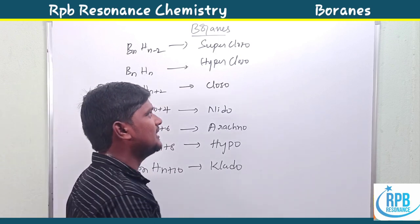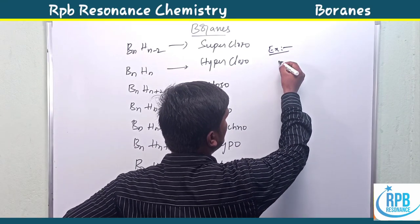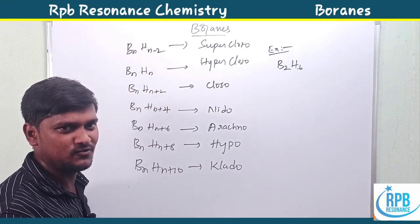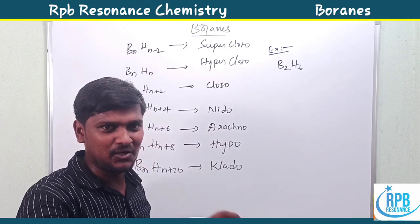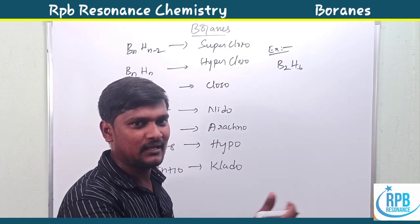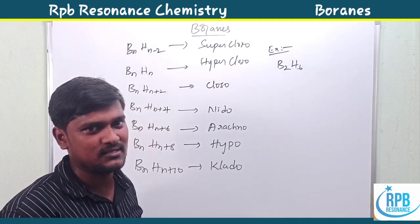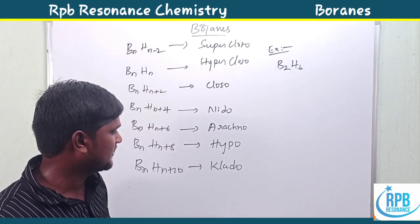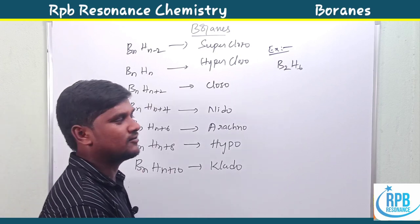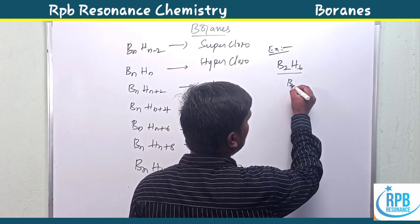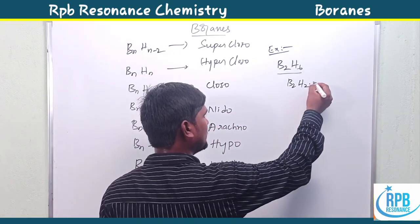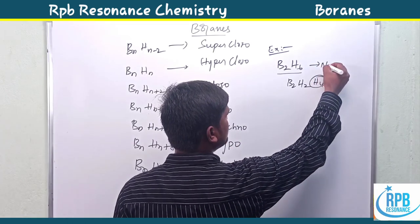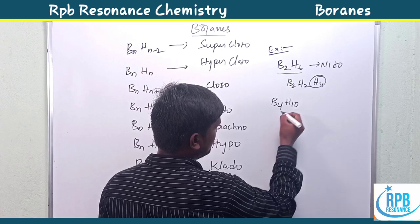Let us now discuss examples. Closo means completely closed packing. Nido means one vertex is empty compared to the closo structure. Arachno means two vertices are removed, hypo means three vertices removed, and clado means four vertices removed from the closo structure. For B2H6: the base formula is BnHn, so B2H2 would be the reference; B2H6 has four extra hydrogens, which falls under BnHn+4 — that is nido type.